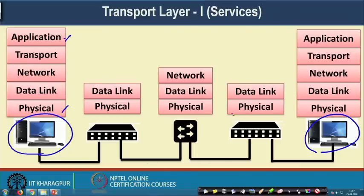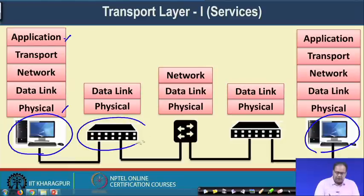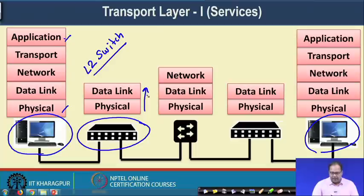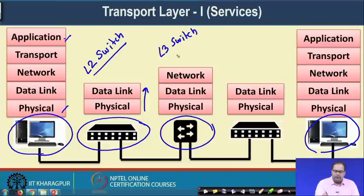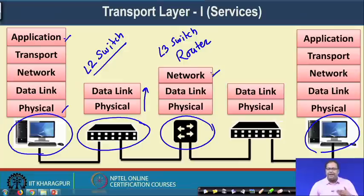Intermediate devices may not have all 5 layers of the protocol stack. For example, in the network you have devices called L2 switches or layer 2 switches, which have the protocol stack only up to the data link layer. Then you have layer 3 devices — called layer 3 switches or routers — which have up to the network layer. These help find paths among multiple hosts or devices in the network when making end-to-end communication.